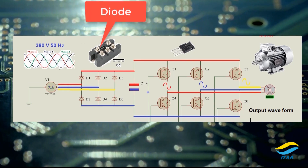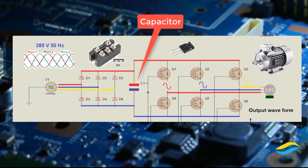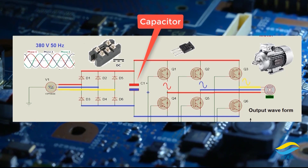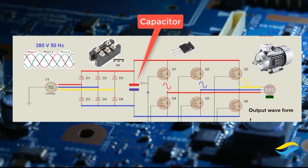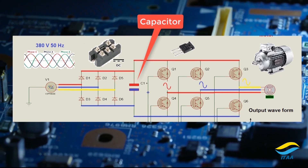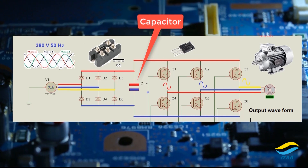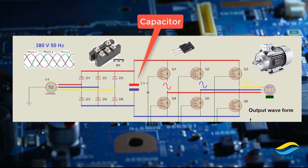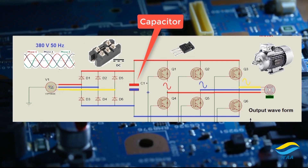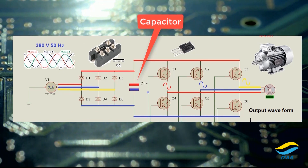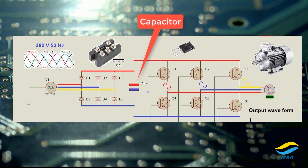That's why we need to have a capacitor here. The purpose of the capacitor is to clean the DC. The output that will come from the capacitor will be very nice and clean.